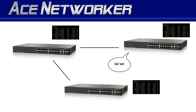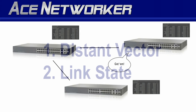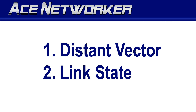Routing protocols define how route tables are built, and they're characterized by the methods used to exchange routing information between routers, the metrics used to determine those routes, and the amount of time it takes for the network to converge. The two major categories of routing protocols are distance vector and link state. We will get into those in another short video.